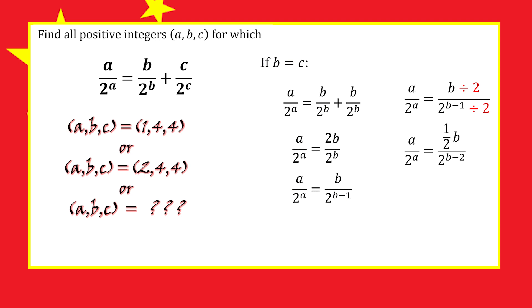Setting the numerator equal to the power in the denominator, we get a half b equals b minus 2, which gives us b equals 4. As we found before, this gives solutions where b equals c equals 4: the triple (1,4,4) with a equals 1, and the triple (2,4,4) with a equals 2.